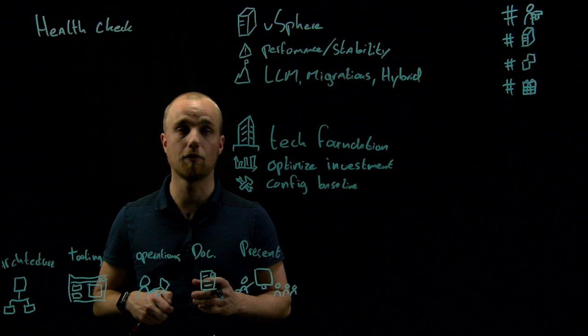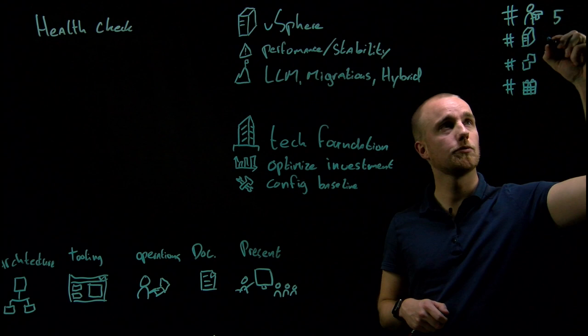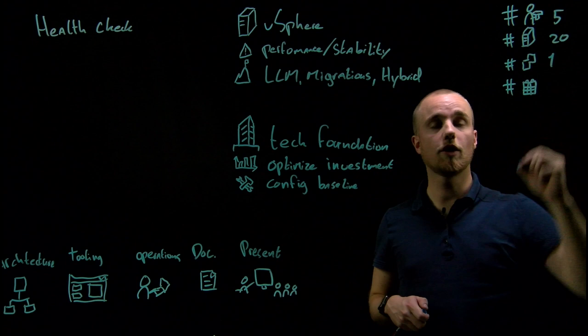Every service comes with a scope and the standard scope of the ITQ Health Check involves five engineers, a maximum of 20 hosts which we will check. This can also be a selection of hosts which represent a larger part of the environment, one vCenter and it will take us three days.